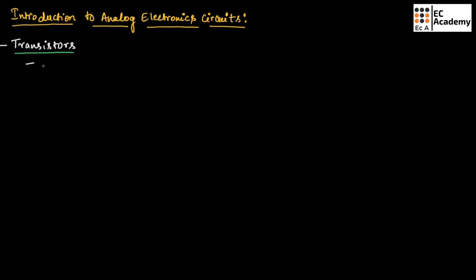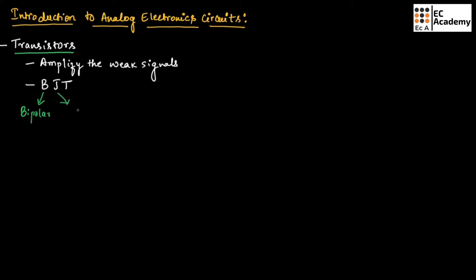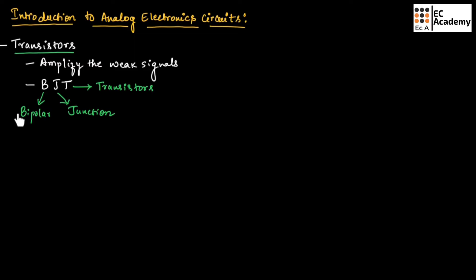A transistor is used to amplify weak signals. A transistor is commonly known as BJT, which means bipolar junction transistor. The term bipolar means both electrons and holes are responsible for current flow in a transistor. That is why it is known as bipolar.